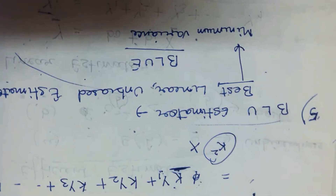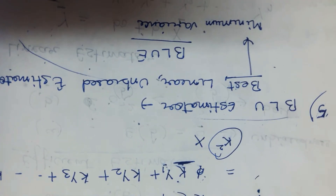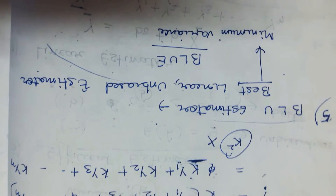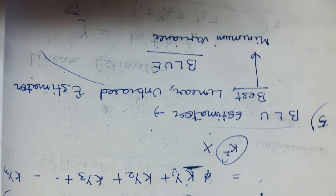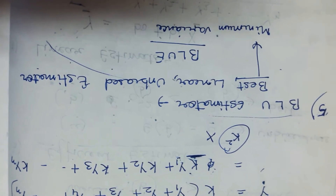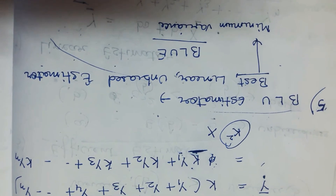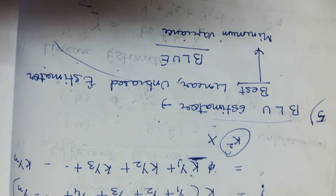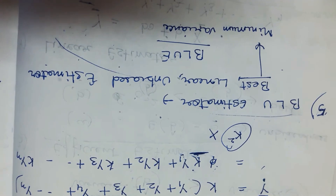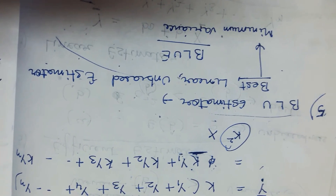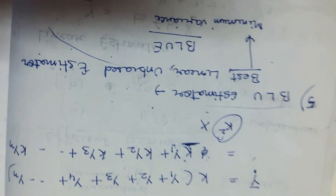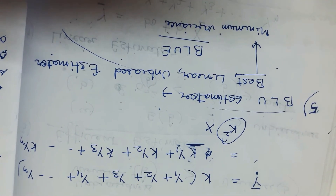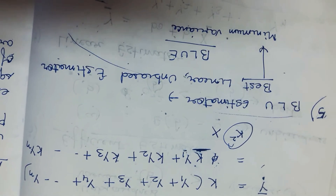The next property is the BLUE estimator. BLUE stands for Best Linear Unbiased Estimator. Best means minimum variance. Linear means the estimator is a linear function of the independent variable. Unbiasedness means the difference between the estimated value and the actual value of the parameter is equal to zero. When the estimator possesses all three properties, it is known as the BLUE estimator. This is a very important property.